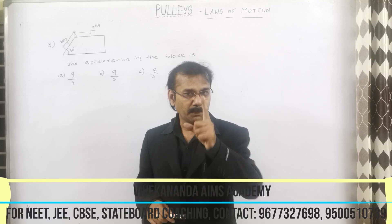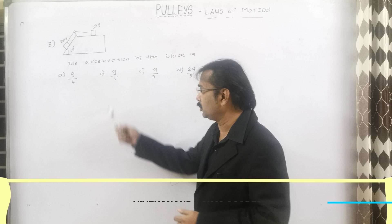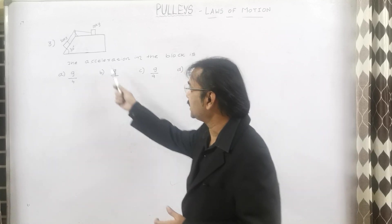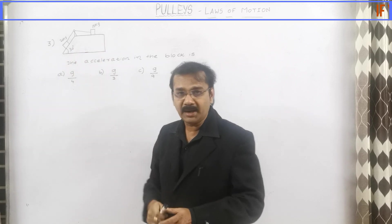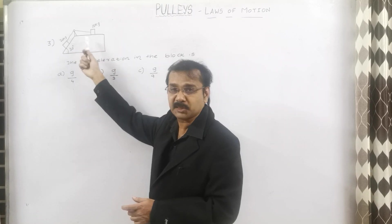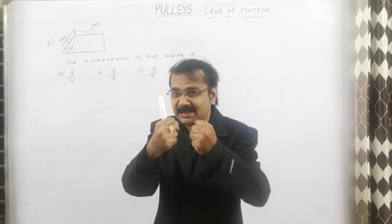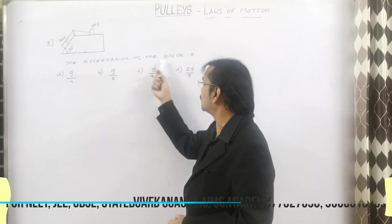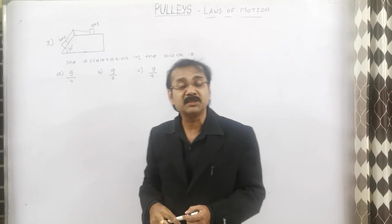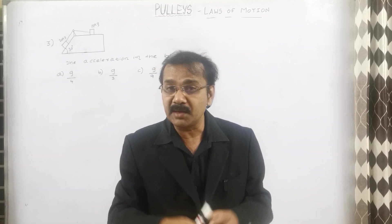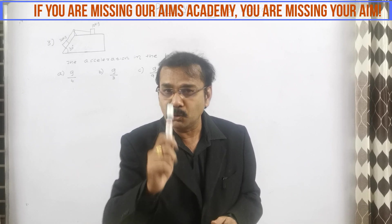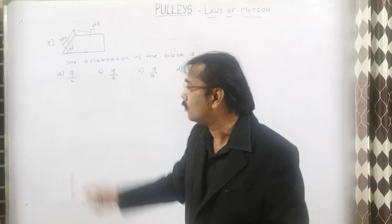Let us go for the third question in the topic of pulleys in the chapter of Laws of Motion. See the third question here and kindly store this diagram in your subconscious mind. There are two important masses — one is 20 kg and the other is 10 kg. The 20 kg is sliding down and the 10 kg is fixed in the horizontal position. There is a small pulley which keeps both masses in tension. The question asks for the acceleration, with options: G by 4, G by 3, G by 9, and 2G by 5. We are not going to use any derivation — use my shortcut cheat code formula for this particular sum.